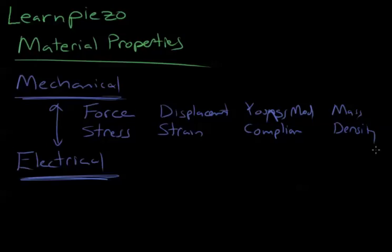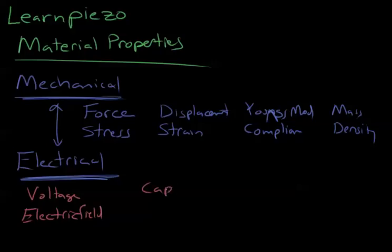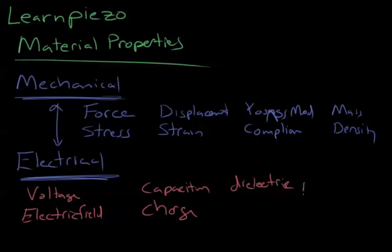With regards to electrical properties and quantities, we have: voltage, electric field, current, capacitance, charge, permittivity (or dielectric permittivity), and electric displacement.